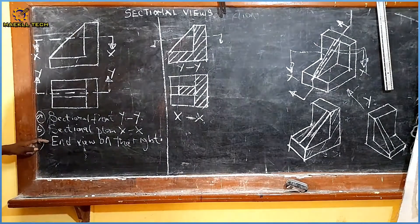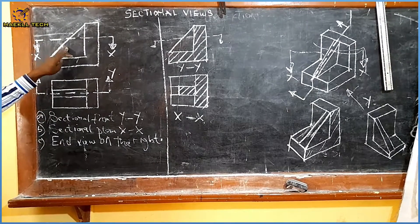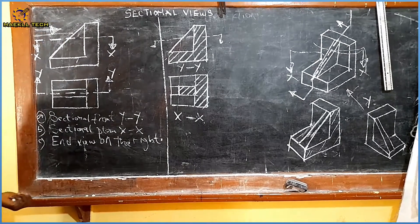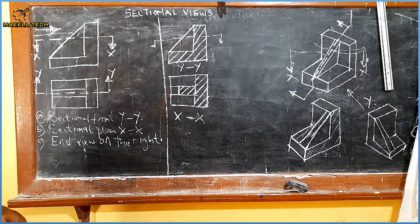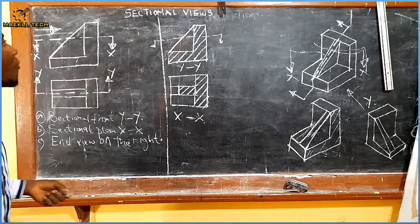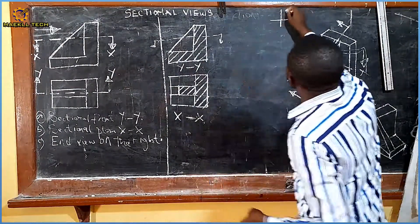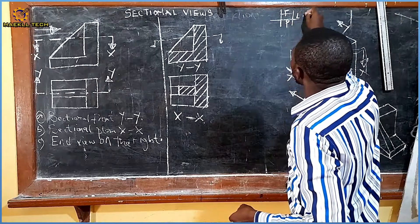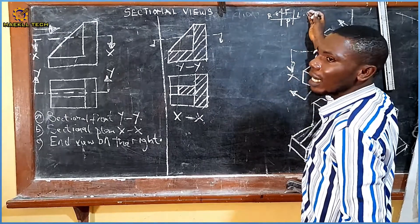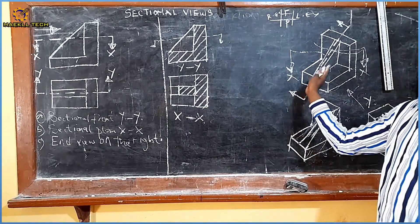The problem also says end view on the right hand side. Working in first angle, the chart of first angle says: front view, plan, left end view, and right end view. They said on the right hand side - these are our right hand side, and that is going to be the left hand view. Our end view - what are we seeing from here? We are seeing this.